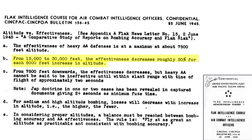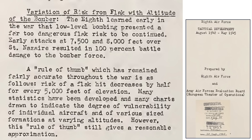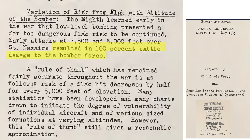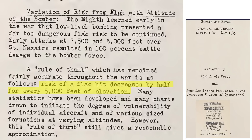Flak gun effectiveness decreases by half for every 5,000 foot increase in altitude between 15,000 and 30,000 feet. This key rule is also shown in a 1945 Army Air Forces evaluation board document titled Eighth Air Force Tactical Development. Attacking targets at low altitude is dangerous — when bombers attacked at altitudes around 8,000 feet, 100 percent of the bombers suffered battle damage. A rule of thumb is that flak strikes are cut in half for every 5,000 foot increase in bomber altitude.